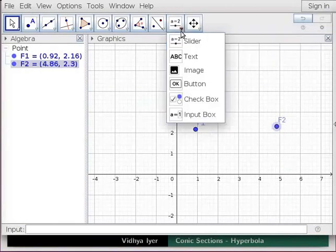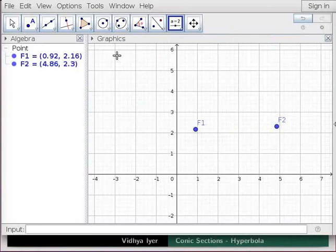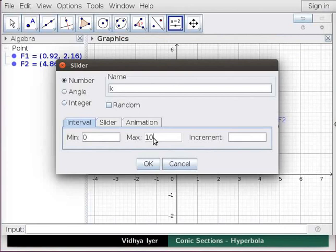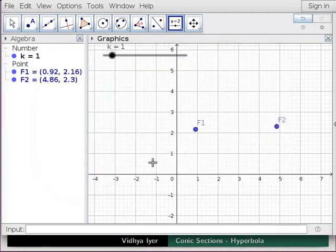Click on Slider Tool and click in Graphics View. A slider dialog box appears in Graphics View. Now, stay with the default number selection. In the name field type K, set min value as 0, max value as 10, increment as 0.1. Click OK. This creates a number slider named K.